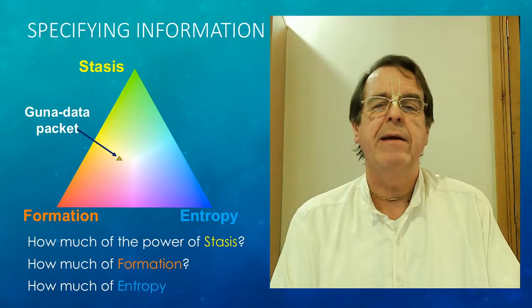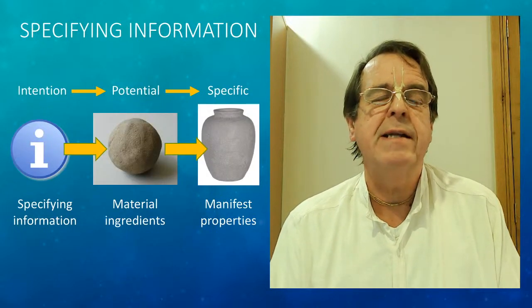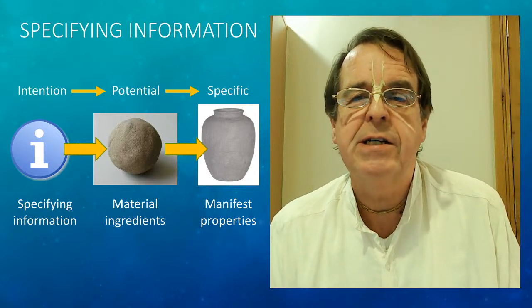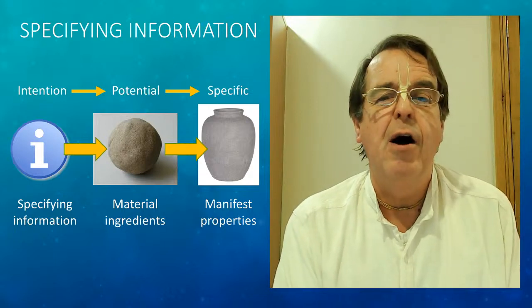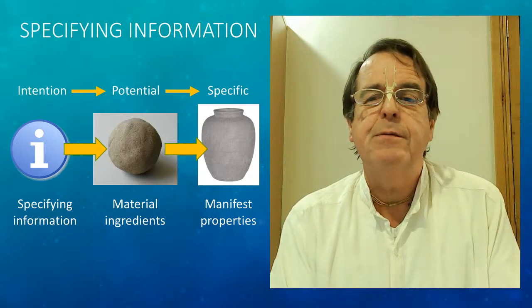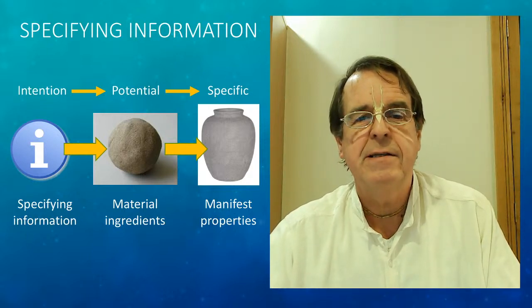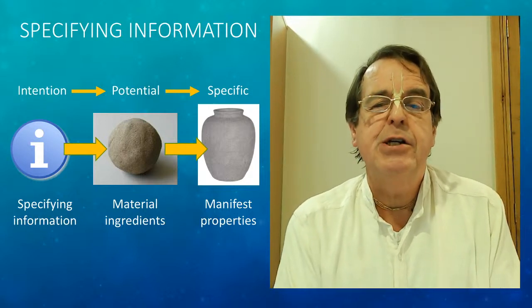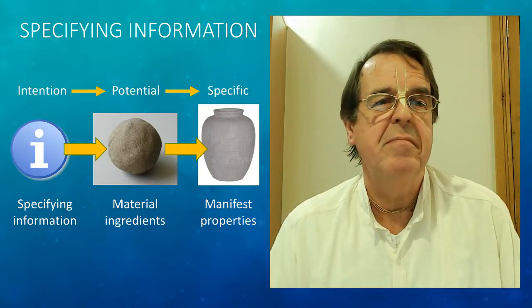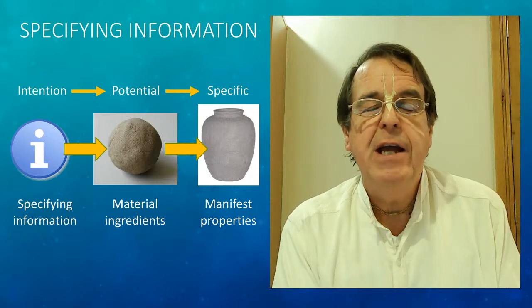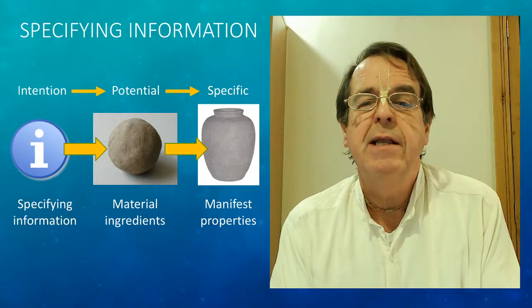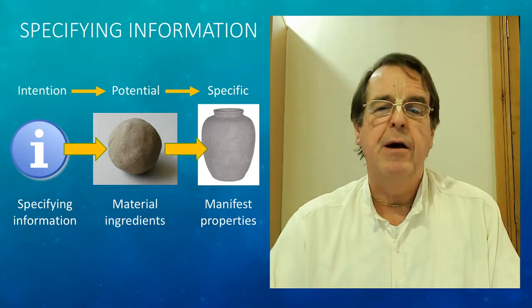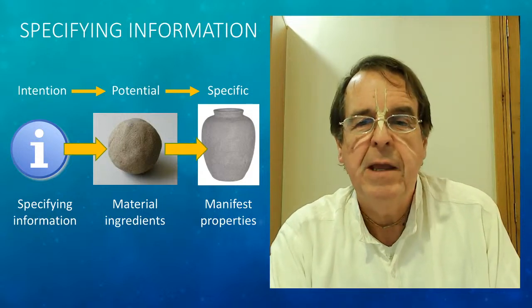It contains all the specifying power to manipulate matter. In the same way that a lump of clay offers potential to be moulded into a huge range of objects, each with its own shape and characteristics. But it is the specifying information and the input of intention and choice that collapses that potential into a specific outcome, like the vase. So, intention contains specifying information, Guna data, which can then act on the potential of material ingredients, like just clay. And when information acts on material ingredients, it produces the manifestation of specifically defined properties. In this case, the shape and the function of a vase. And this is a key principle of how the world around us operates.